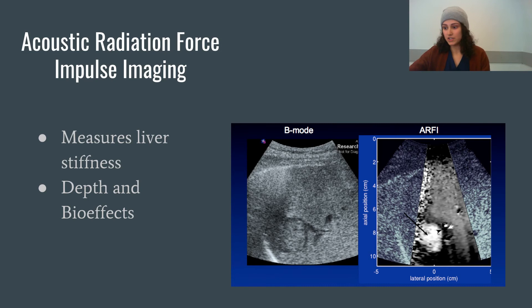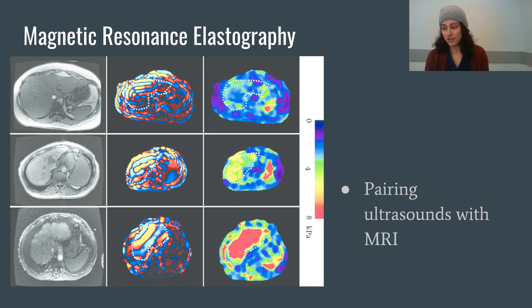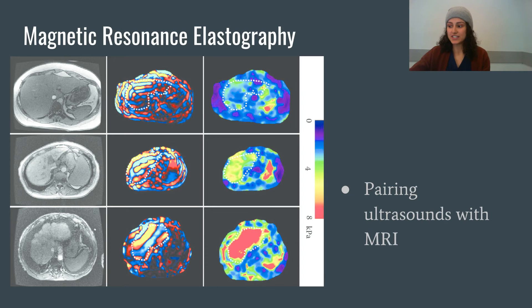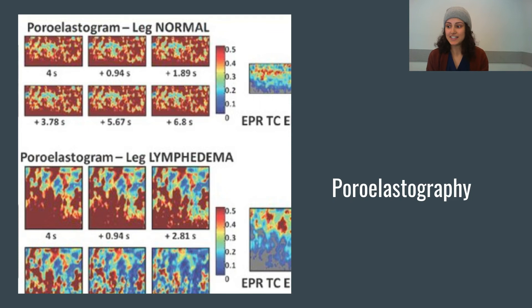Magnetic resonance elastography, or MRE, is another way shear wave is used, generally used as an image-based counterpart to palpation to help diagnose the presence of disease like inflammation, fibrosis, and cancer. This image compares a normal MRI on the left to the shear wave in the middle and the shear stiffness on the far right. Poroelastography is generally used to assess the amount of lymph drainage, so we use it for limbs. This picture shows an example of a normal leg versus a leg with lymphedema, where lymph isn't being drained properly. Those are the main uses for shear elastography.